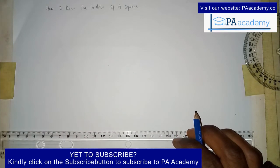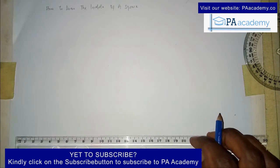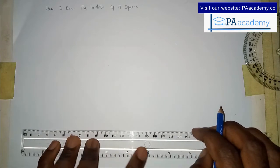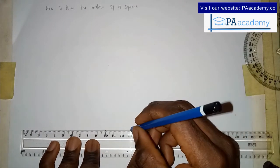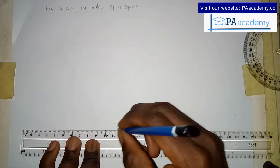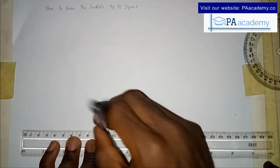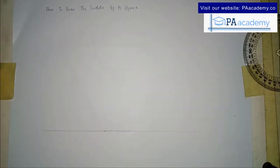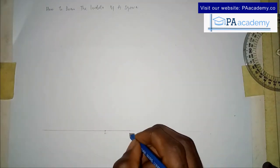To start with, you are going to be drawing the square. For this particular video I'm going to be using a square with a side of three centimeters. So from here to here is my three centimeters. Let me just extend it a bit with a faint line. This is point A and this is point B.